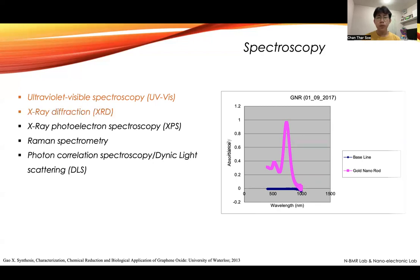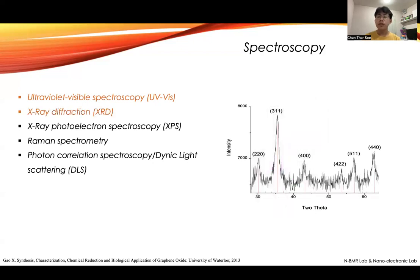The next one is X-ray diffraction (XRD). X-ray diffraction gives the crystal structure of the material. For example, the diffraction peaks in the pattern — the binding diffraction peaks — give the planes of the crystal structure, and we can identify where the crystal structure is inside the material.